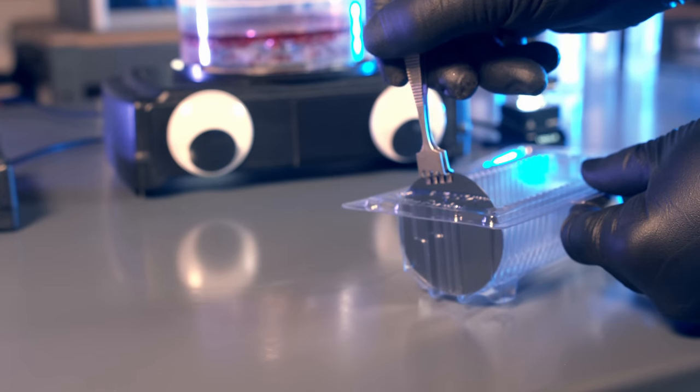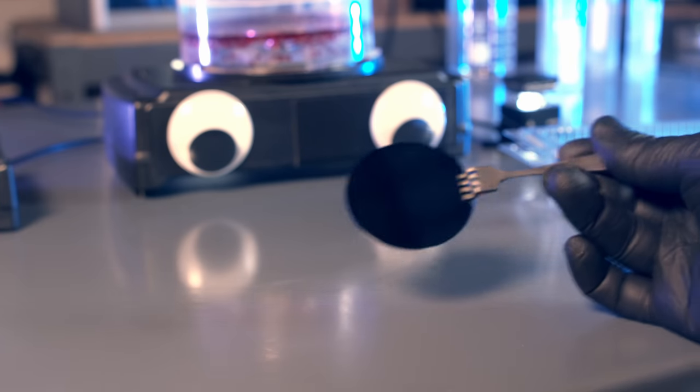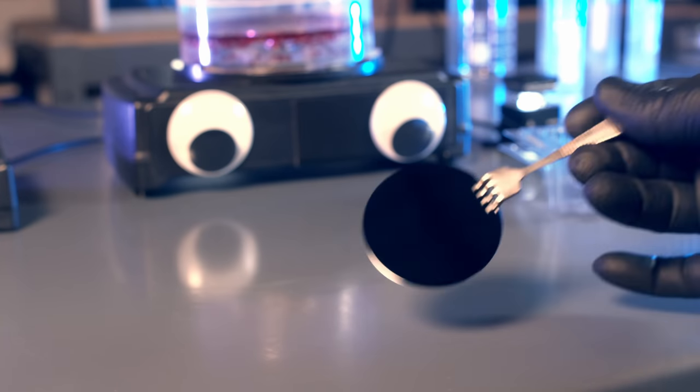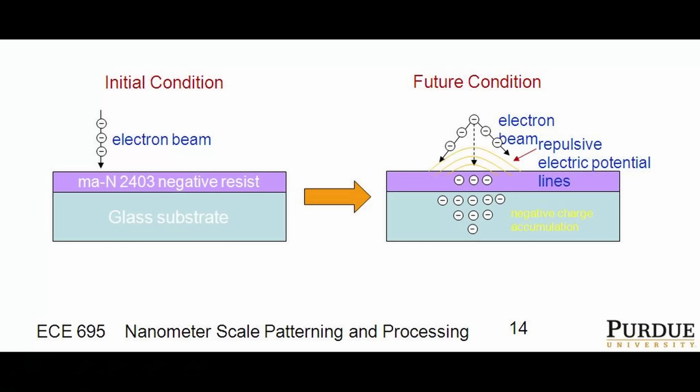I'm using a doped silicon wafer as my substrate. The two main properties I care about: it's very flat, and — more importantly — it's conductive because it's been doped, so electrons can easily conduct through the material and out to ground. If you use something like a glass slide, electrons bury themselves into the insulating material with no path to ground, build up locally, and create a charging effect that repels electrons where you're trying to write. Insulating substrates can be handled by coating them with a thin layer of metal before or after applying the resist.